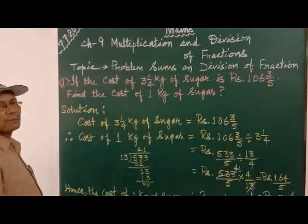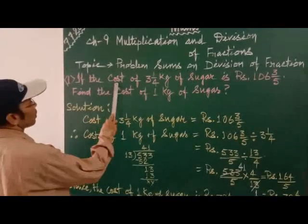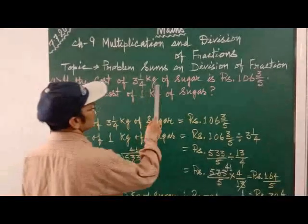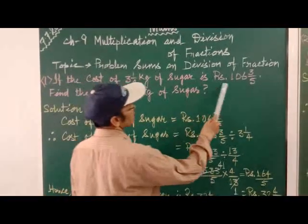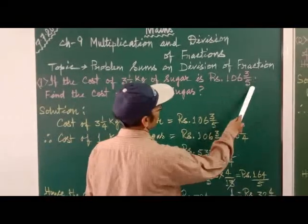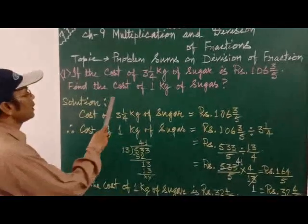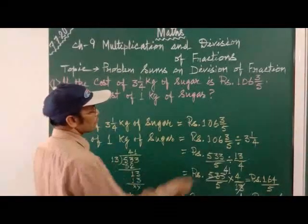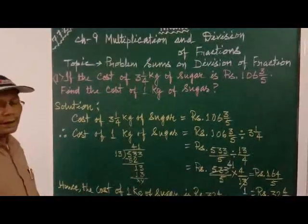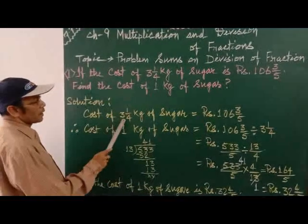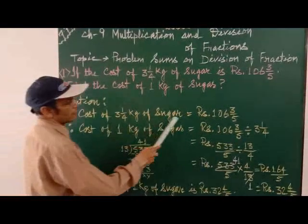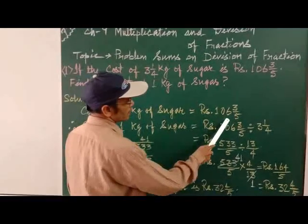So here I am giving you the first example. If the cost of 3 1/4 kg of sugar is Rs. 106.5, you have to find the cost of 1 kg of sugar. So for this what you have to do, how to write it: cost of 3 1/4 kg of sugar is Rs. 106.5.